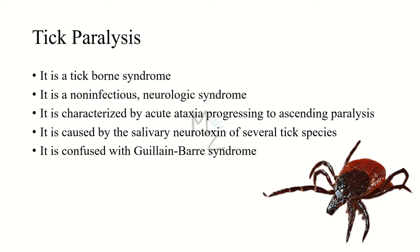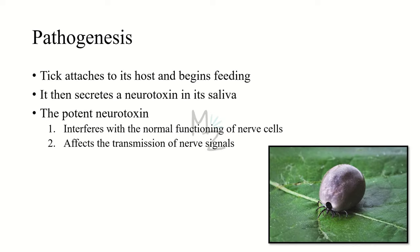Tick paralysis is a tick-borne, non-infectious neurologic syndrome characterized by acute ataxia progressing to ascending paralysis. Ataxia is the group of disorders that affect coordination, balance, and speech. It is caused by a salivary neurotoxin released by several tick species, and is often confused with Guillain-Barré syndrome.